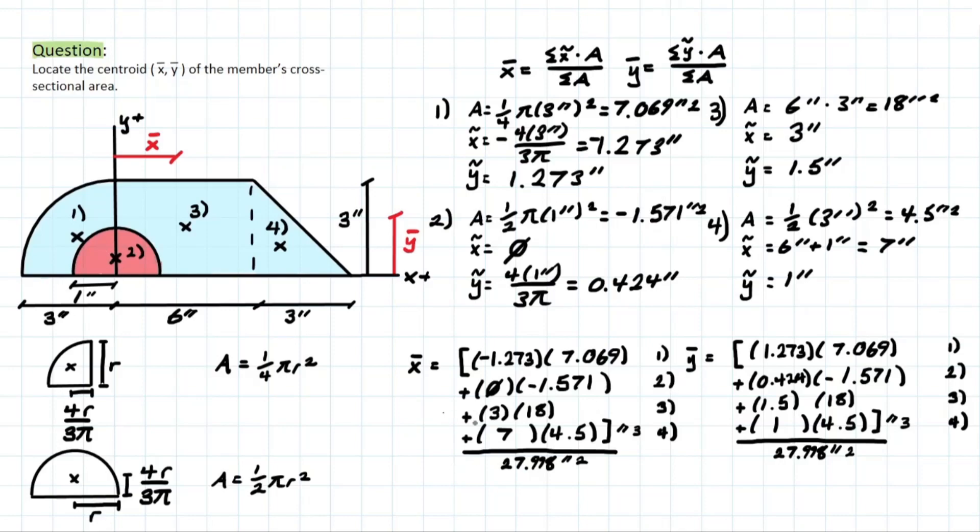So solving these two formulas, you are left with your final answers, which is going to be x bar equal to 2.73 inches. And that is going to be in this direction from origin to the right. And then for y bar, you have an answer of 1.42 inches, and that is going to be from origin upwards.